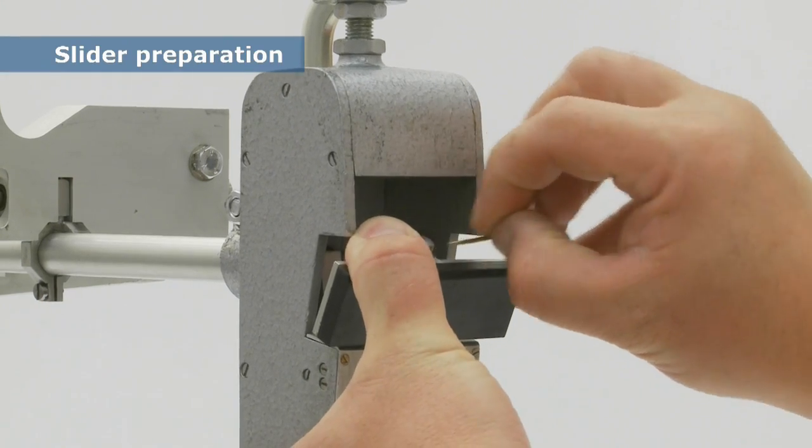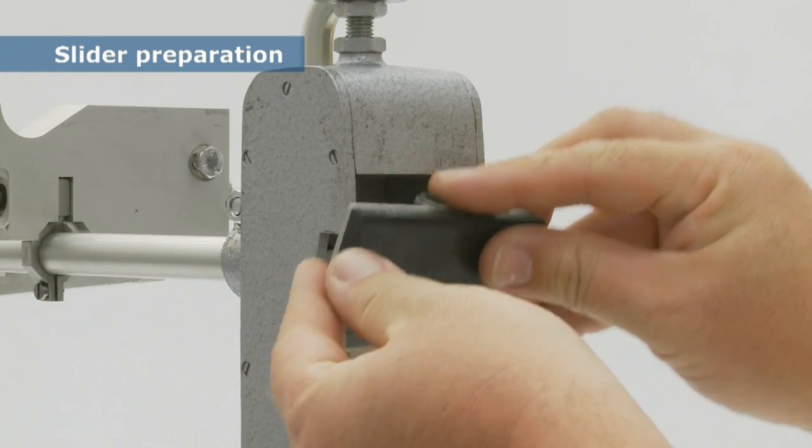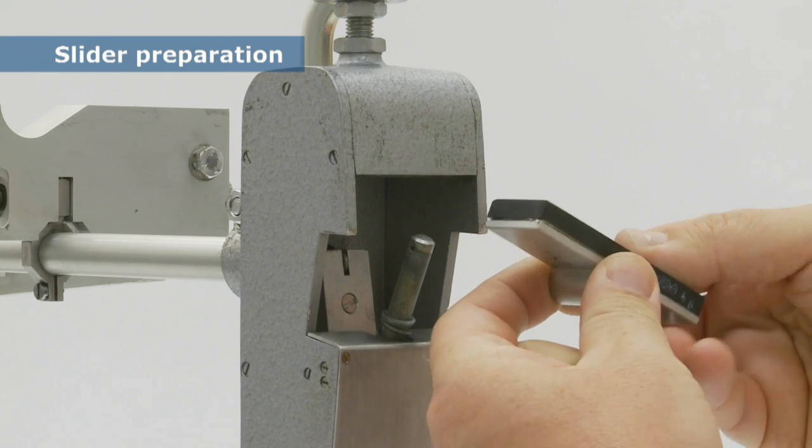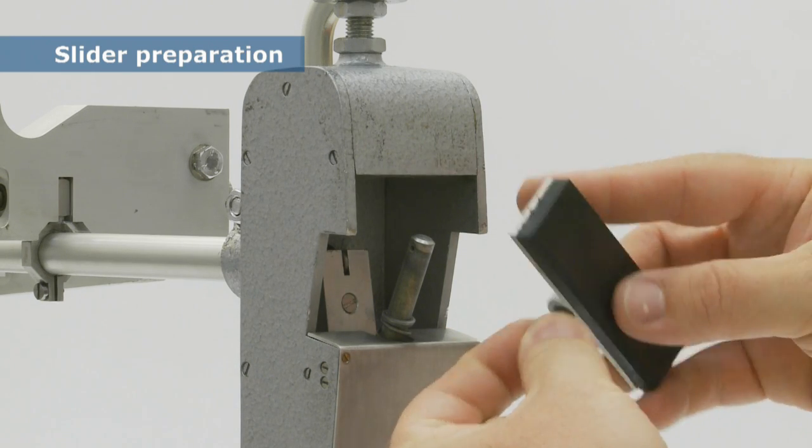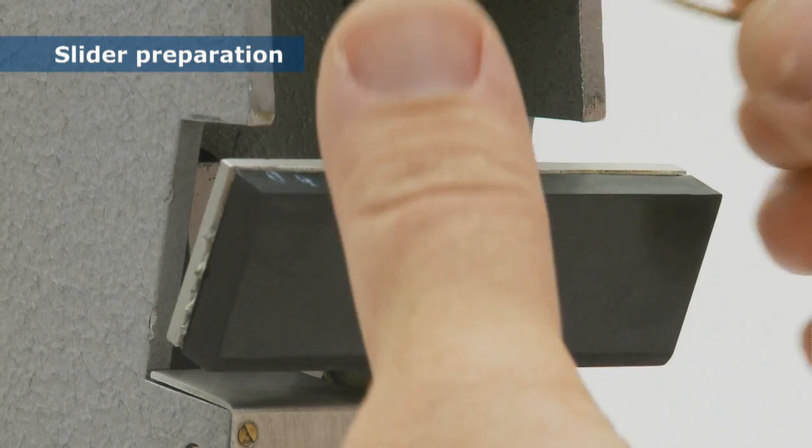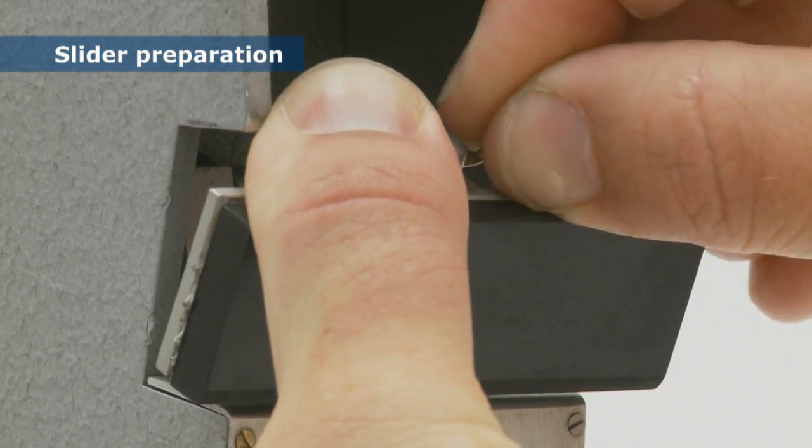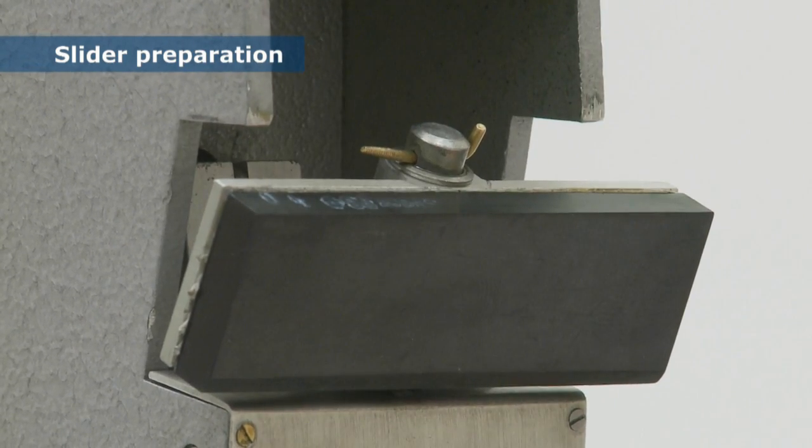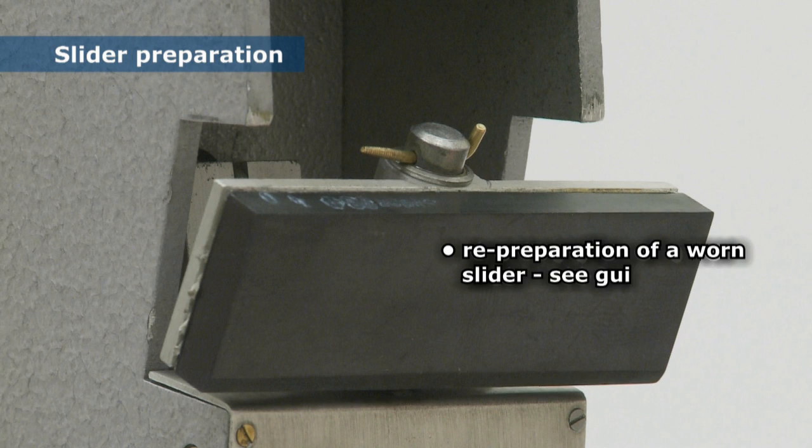The slider 96 used here has been turned over to present a new edge which now needs to be prepared. Note that the spring is compressed without putting any force on the arm while the washer and retaining pin are replaced. The re-preparation of a worn slider 96 is described in the guidelines in section 4.1.